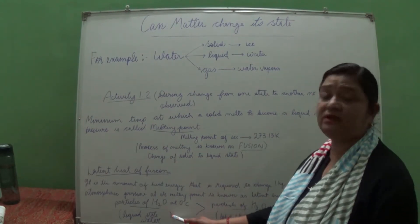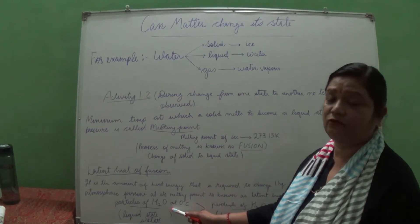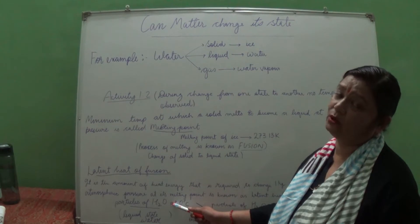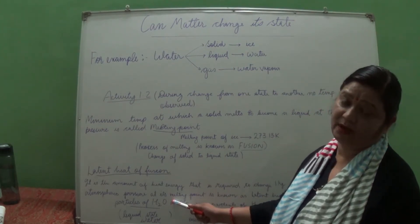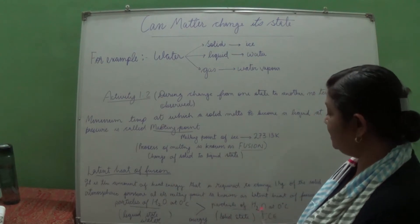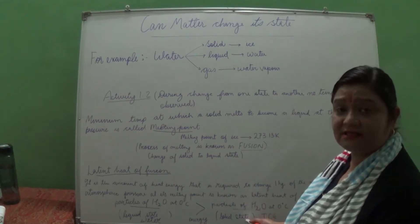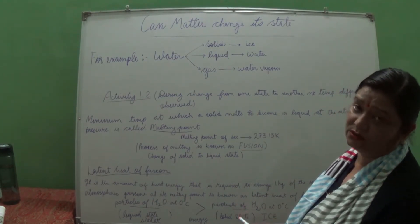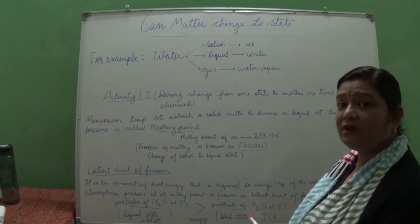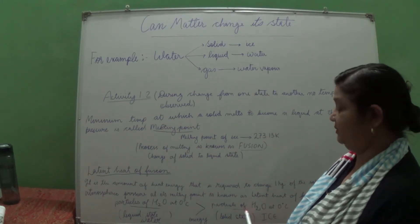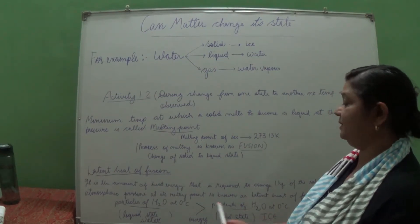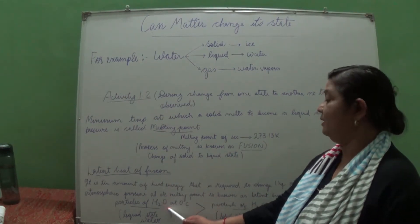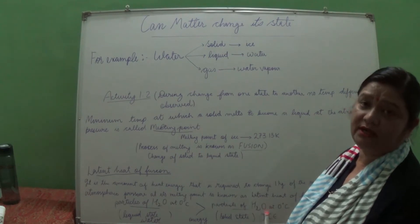In liquid state, the space between the particles of water is more, so they can move freely, have more kinetic energy, and inter-particle forces are less. In ice, which is in the solid state, the energy is low because the particles are closely arranged — inter-particle forces are more, there is no space to move, so kinetic energy is less. Therefore at the same temperature of 0 degrees Celsius, kinetic energy in liquid state is more than in solid state.